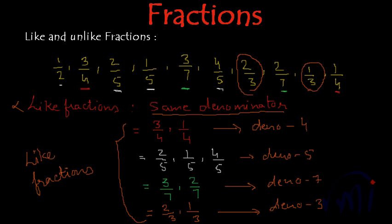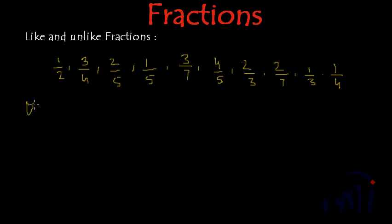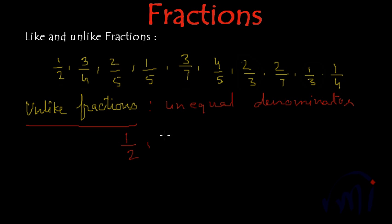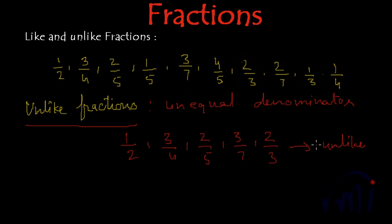Now if we talk about unlike fractions — the definition of unlike fractions: unlike fractions have unequal denominators. So from the fractions we noted down, the group of 1 by 2, 3 by 4, 2 by 5, 3 by 7, and 2 by 3 are all unlike fractions. Why? Because they all have different denominators.